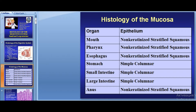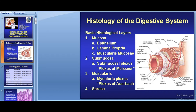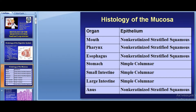When talking about the digestive tube, you must remember that in each organ there is a different structure of each layer. For example, differences in the mucosa exist across all organs: the oral cavity, pharynx, esophagus, stomach, small intestine, and large intestine.